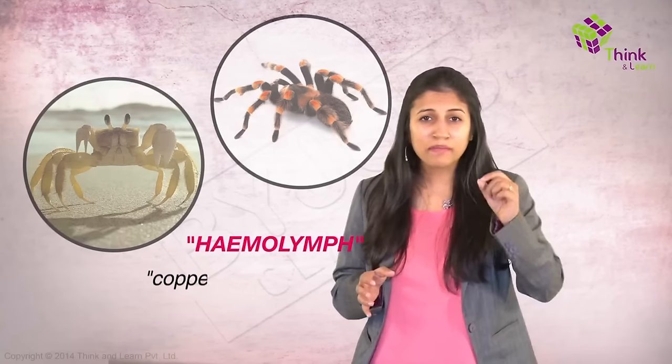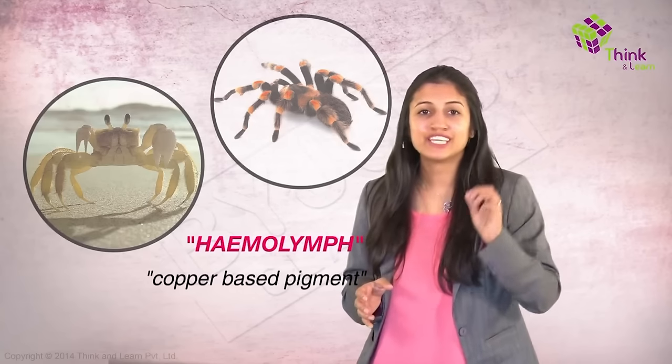There are some blue blood creatures - spiders and crabs make for good examples. They have something similar to blood called hemolymph and there is a copper based pigment in that which makes it blue.